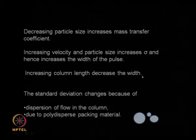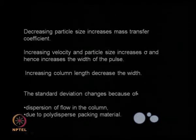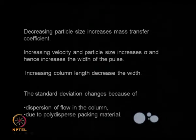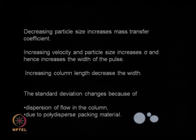Increasing velocity and particle size increases sigma, meaning the Gaussian pulse becomes broader. Increasing column length decreases the width — a longer column gives more theoretical plates and a narrower pulse. Additionally, standard deviation changes because of dispersion of flow in the column due to poly-dispersed packing material: even nominally uniform particles have a size distribution of plus or minus about 10 percent of average diameter, and this poly-dispersity also affects sigma.